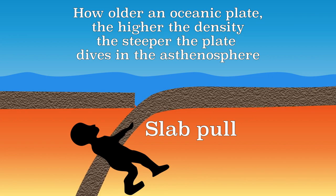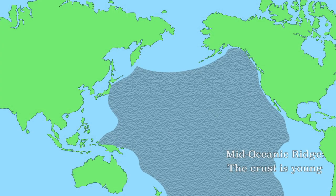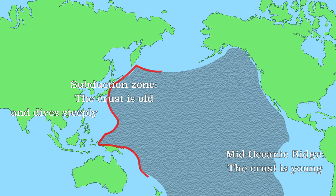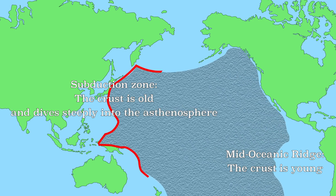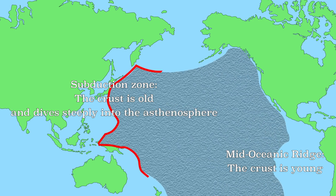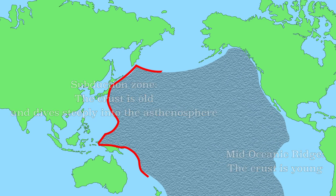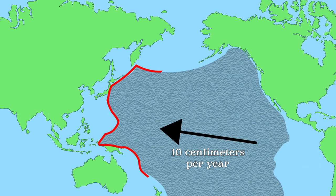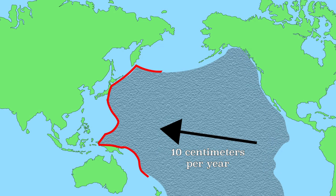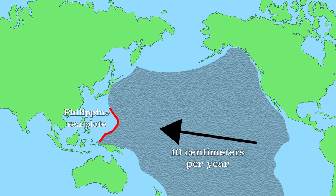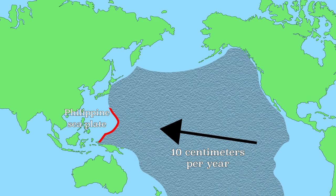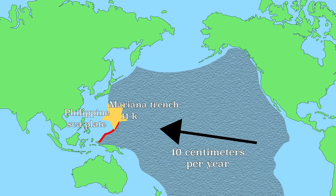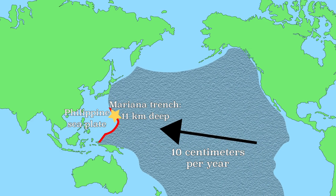The Pacific plate is very old at the time of subduction, which causes the plate to have a high density and dive steeply into the asthenosphere. The slab-pull is very strong here and the Pacific plate has a relatively high speed of around 10 centimeters per year. On the west side, the Pacific plate dives below the Philippine plate. Due to the age and gravity of the Pacific plate, it dives steeply downwards, creating a trench of 11 kilometers deep.